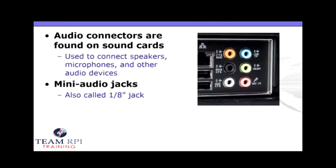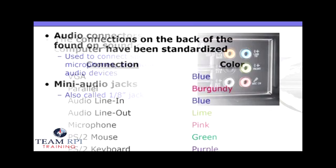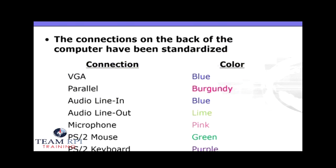Audio connectors — you'll find these on your sound cards. It's what's used to connect speakers and microphones, or any other audio device, including the mini audio jacks. The connections on the back of modern PCs have been standardized with color coding so that you can quickly identify what type of connection goes where. For example, VGA is blue, the parallel port — remember the DB connectors? — those are burgundy, and a microphone connection is going to be pink.